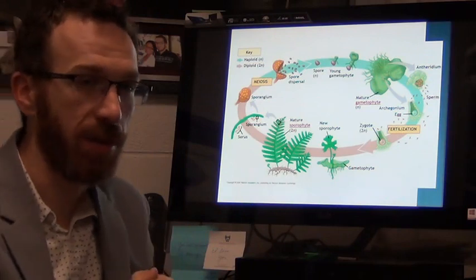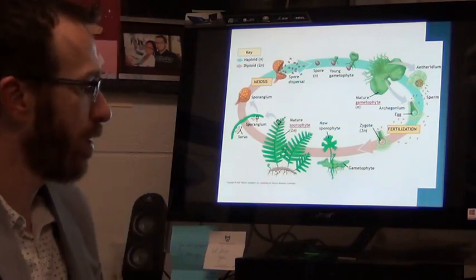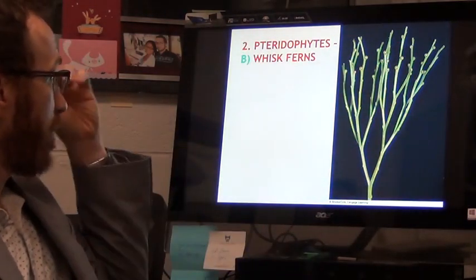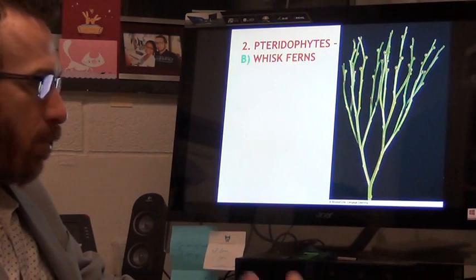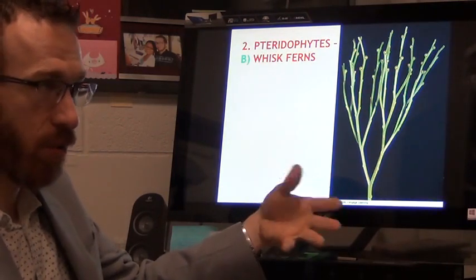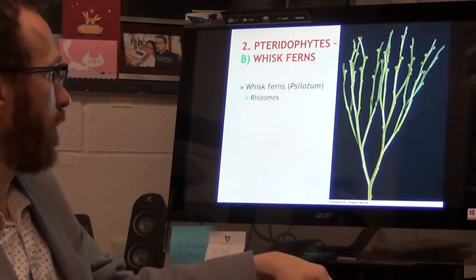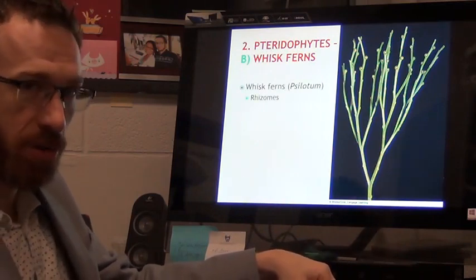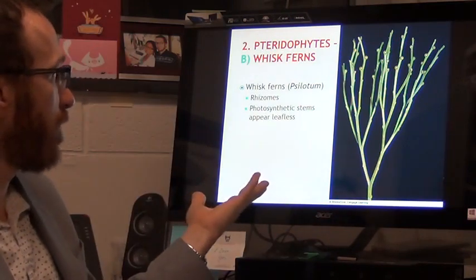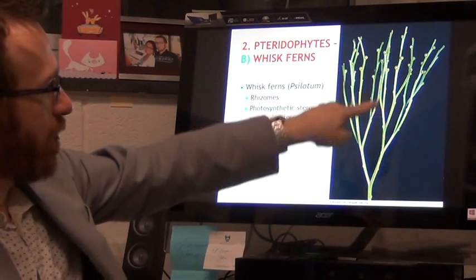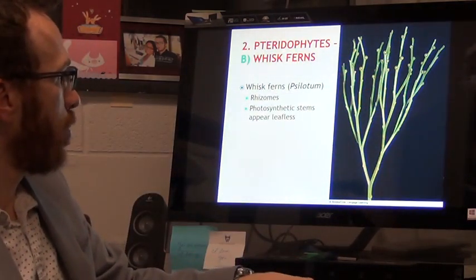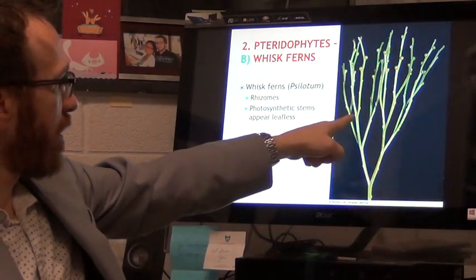Let's talk about the pteridophytes. We talked about ferns, and we also have whisk ferns. Whisk ferns look like this—they look weird, there's no real leaves. They do possess rhizomes just like our ferns do, but they look like they have no leaves. In fact, these stems go through photosynthesis. The leaves are just these tiny little nubs here that you can see.